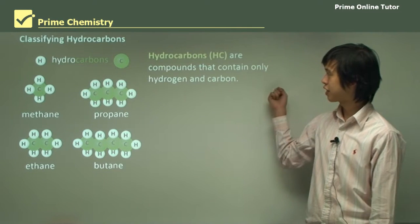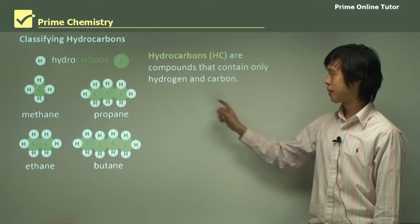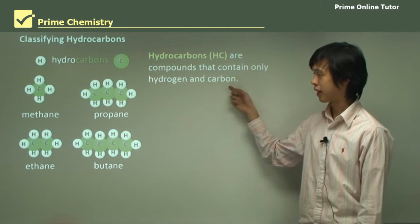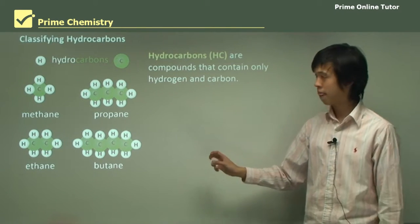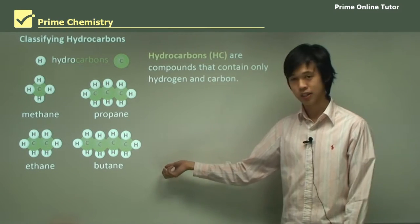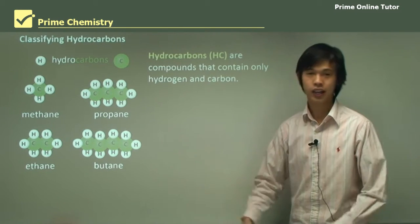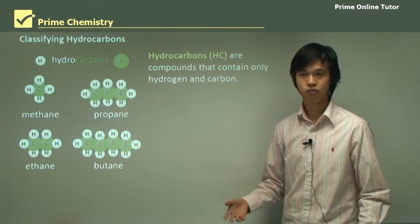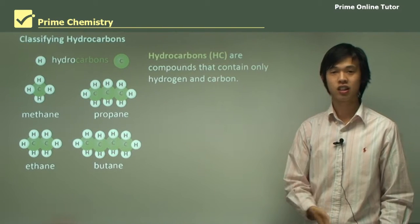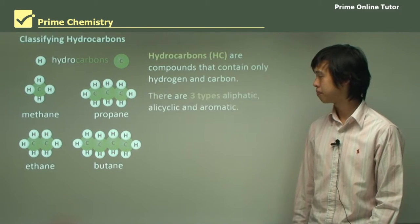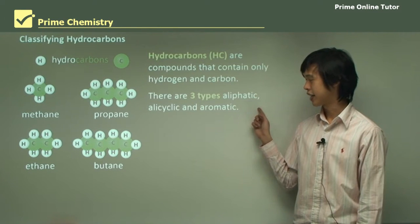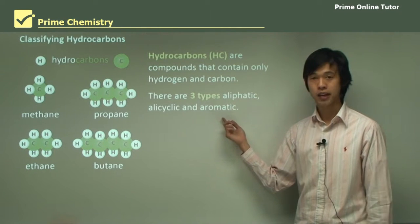Hydrocarbons (HC) are compounds that contain only hydrogen and carbon. Here's a group of them: methane, propane, ethane and butane. We'll talk about how we name these later on, but that's all we're talking about here — just hydrogen and carbon. There are three types: aliphatic, alicyclic, and aromatic.